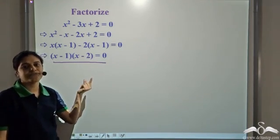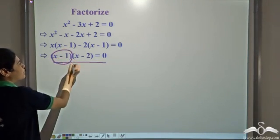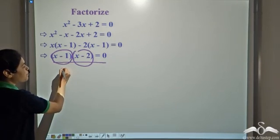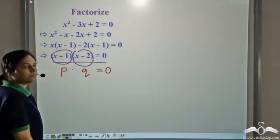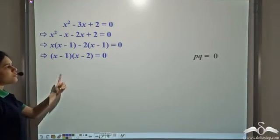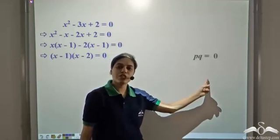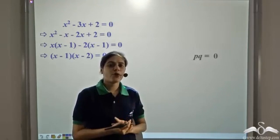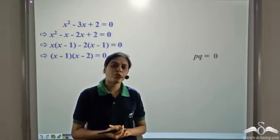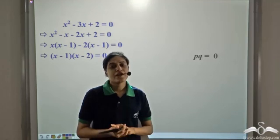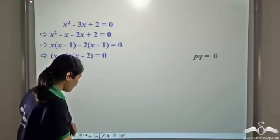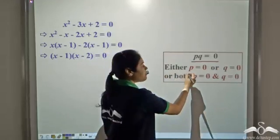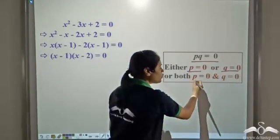What should we do next? Observe that this is something into something equal to zero. We can represent it as p times q equals zero. Now when the product of two numbers is equal to zero, what can you say about the two numbers? If the product of two numbers is zero, at least one of them will be zero. That is, either p will be zero, or q will be zero, or both will be zero.